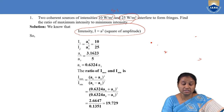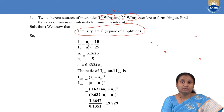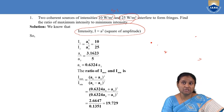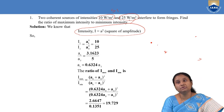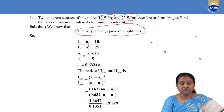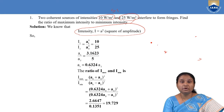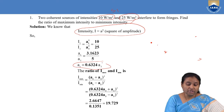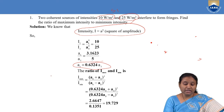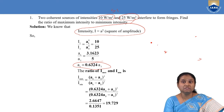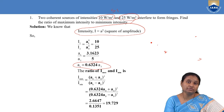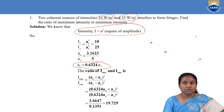The ratio A1 squared by A2 squared equals 10 by 25, which is approximately 0.6324. So the amplitude of the first wave A1 is equal to 0.6324 times the amplitude A2 of the wave coming from the second source.